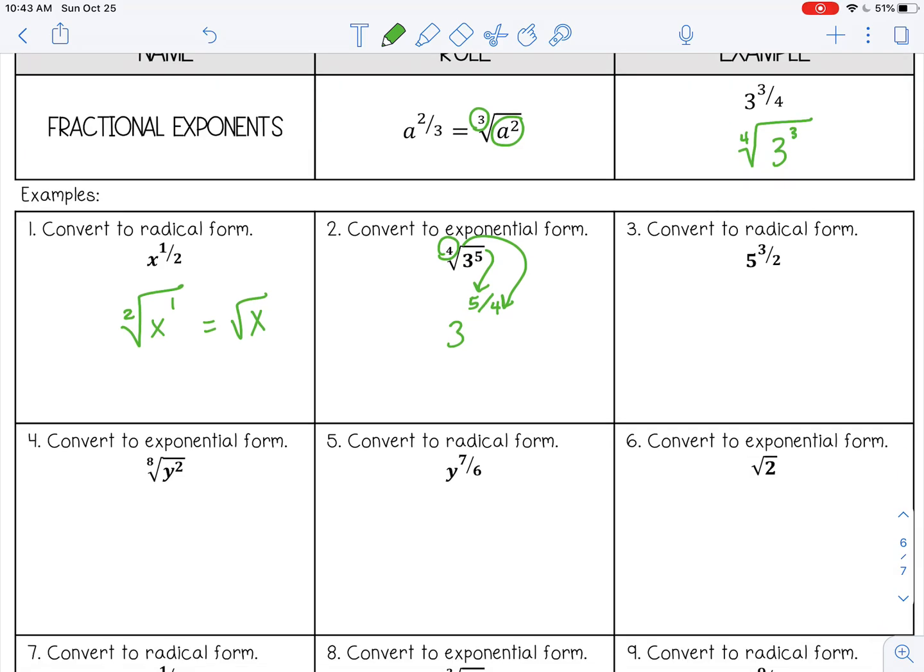The next one, 5 to the 3 halves power. So the denominator is your root, square root of 5 to the third power.